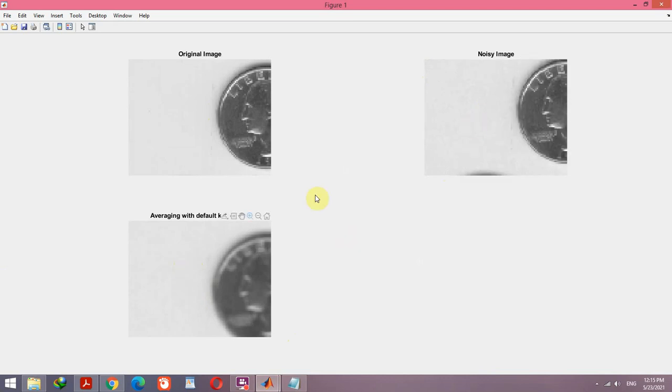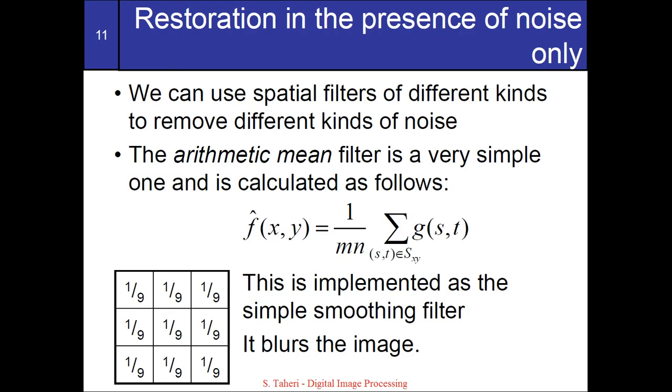As you can see we successfully remove the noise but the result image is blurred. So this is the general effect of the arithmetic mean filter. Let's investigate the effect of the size of the mask.